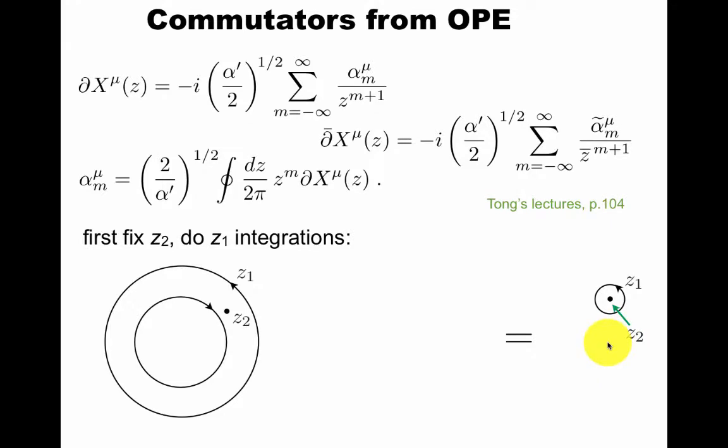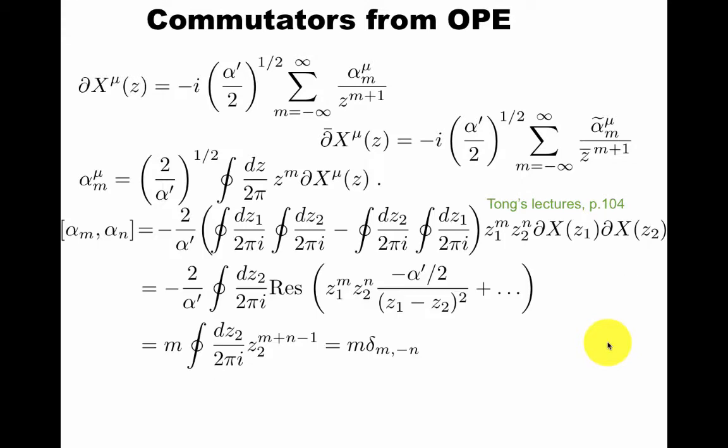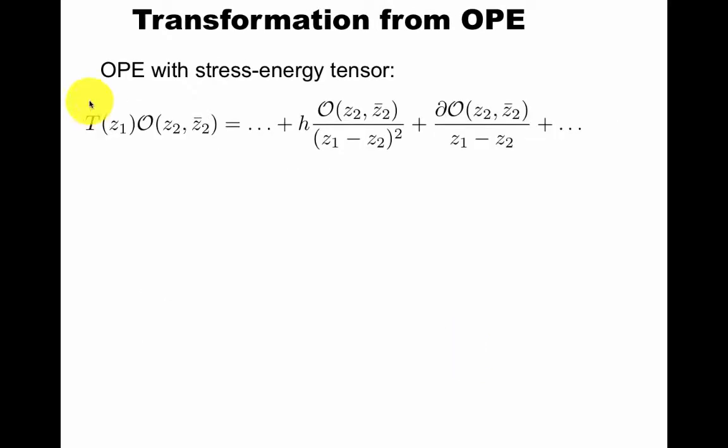You're doing z1 around z2, and then you do the z2 integration. This amounts to, you first do the z1 integral, you pick out this residue, and you perform the z2 integral. You get what you expect. The commutation relation of these modes is a rescaled harmonic oscillator algebra.